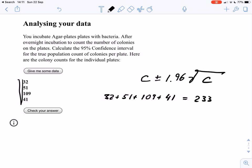So we have 233 plus minus 1.96 square root of 233. So this one gives here 15 point, I need to get the calculator out because I can't do the square roots in my head. So that's 15.26.